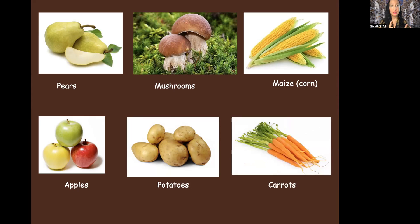Let's do the pronunciation from the top left: pears, mushrooms, maize, corn, apples. What's the green one? Granny Smith. What's the yellow one? Golden apple. And the red ones — there are many: Macintosh, Red Delicious. Potatoes. Carrots. Good job. Now remember, not all mushrooms are edible — meaning you can't eat all mushrooms because some of them are poisonous. So when you see mushrooms on the ground next to trees, you have to know your mushrooms. You can't just eat them.